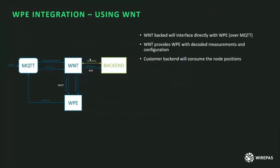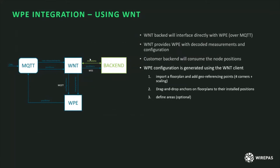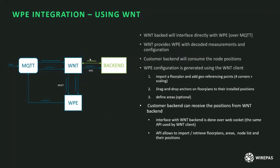The third option is to use the WNT as your integration point. As mentioned, the WNT backend provides an API and you can interface directly to it in the same way as the WNT client does. In this scenario, the WNT can be used to generate the configuration by importing anchors and determining their positions, decoding measurement messages, and injecting the configuration to the WPE. The backend client then only needs to consume the computed positions. The configuration generated through the WNT client follows a very simple workflow: import the floor plan, drag and drop anchors onto the floor plan, and optionally define areas.